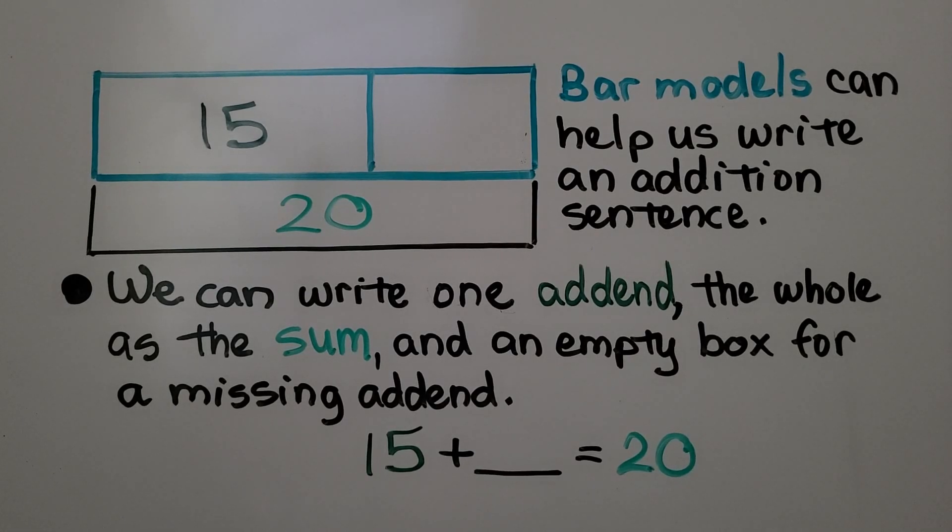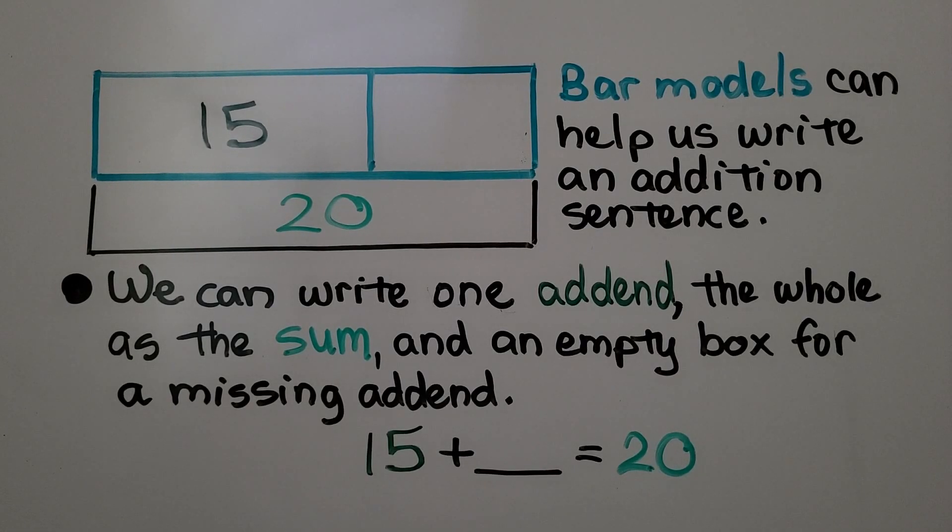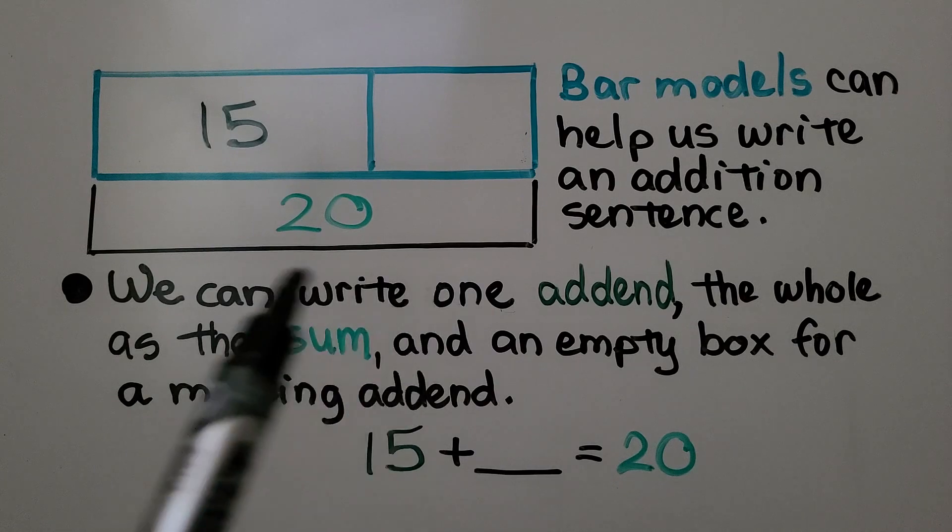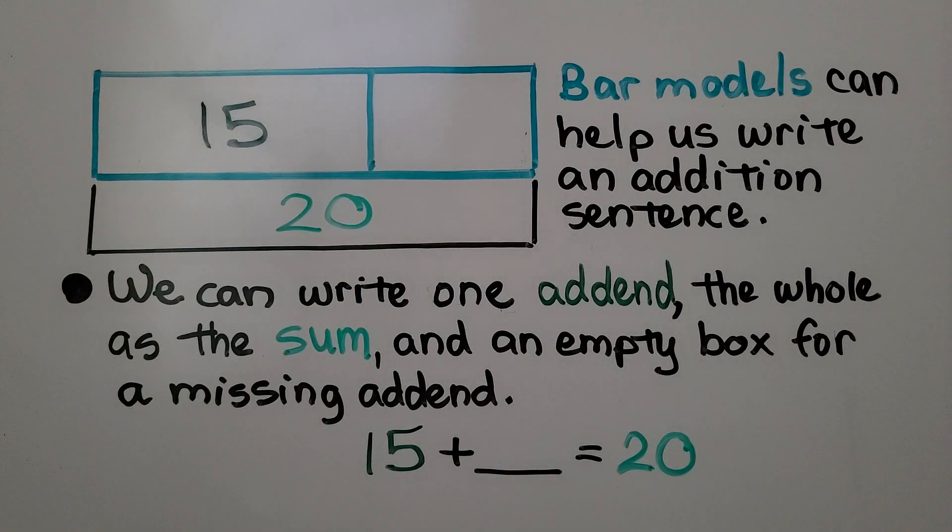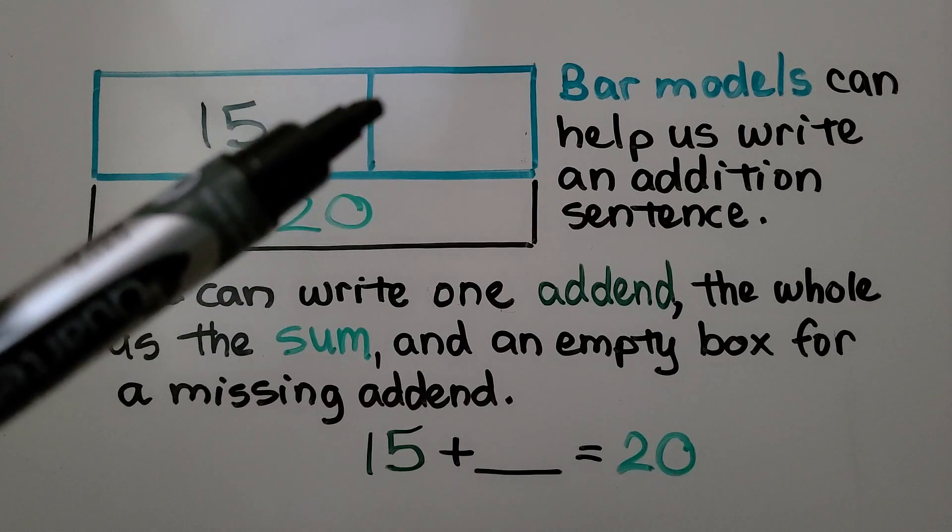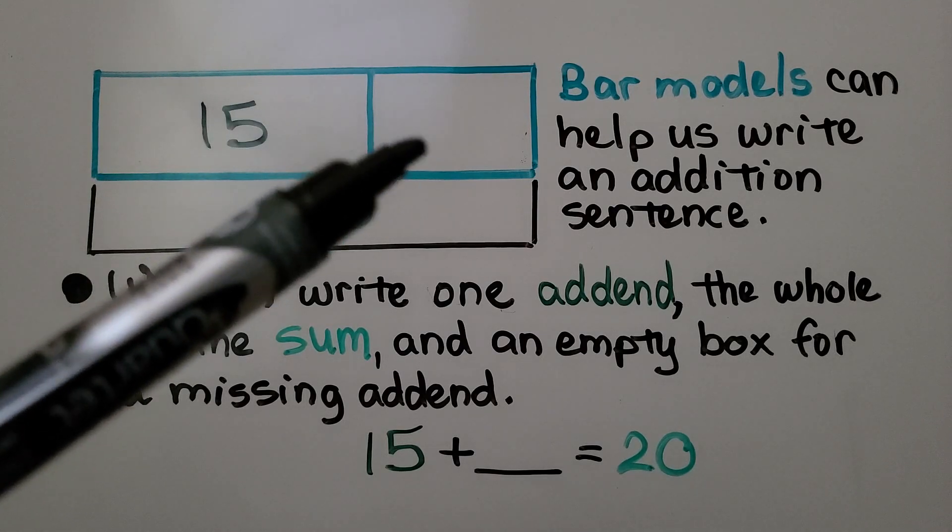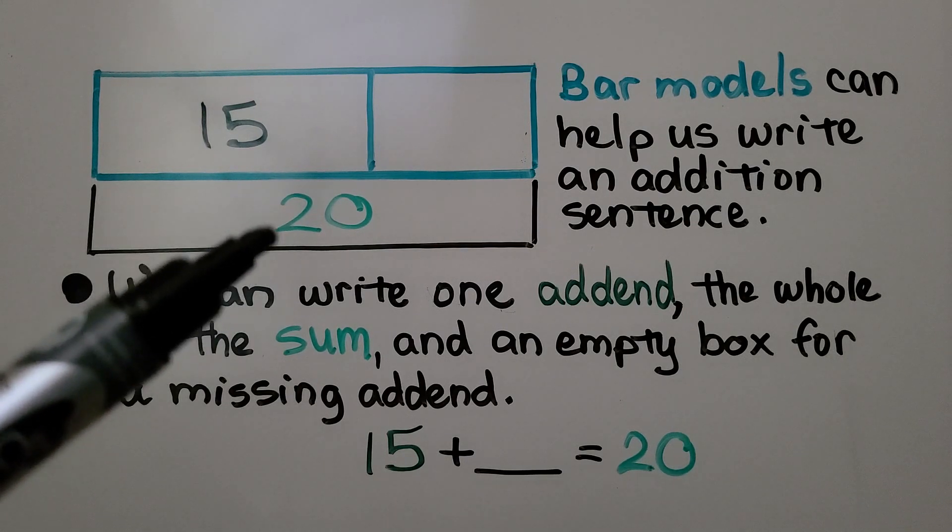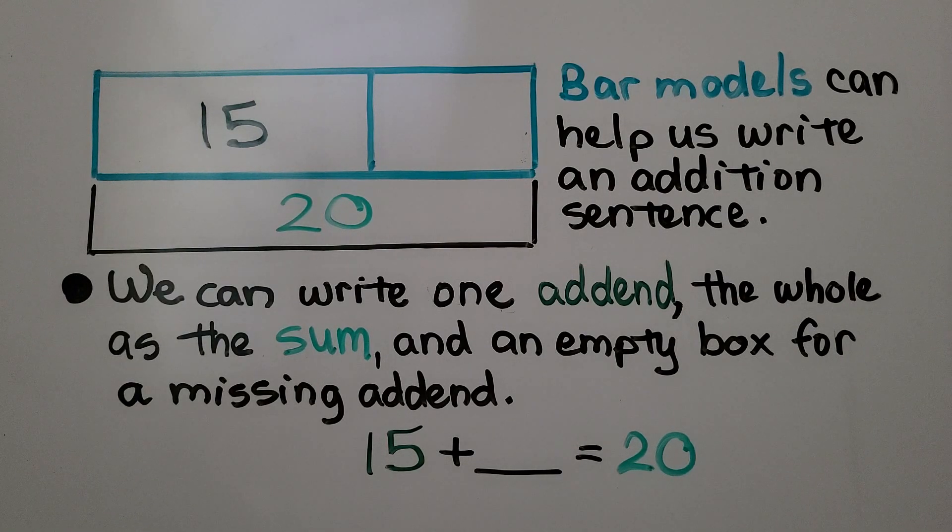Bar models or bar graphs can help us write an addition sentence. We can write one addend, the whole as the sum, and an empty box for the missing addend. If we have 15 plus something, we write a 15 here, we leave this box empty, and if it's equal to 20, we write the 20 by the bracket. That would be 15 plus some number is equal to 20.